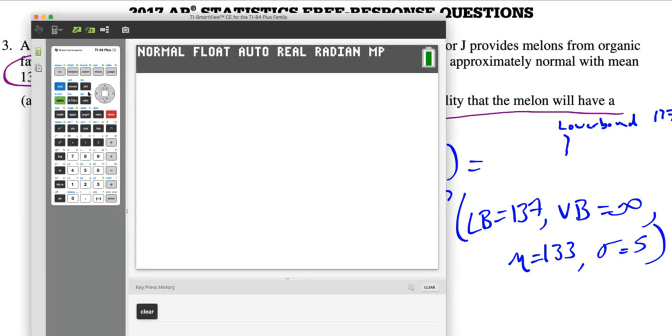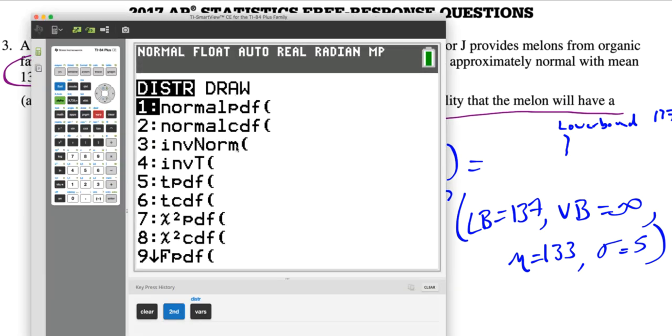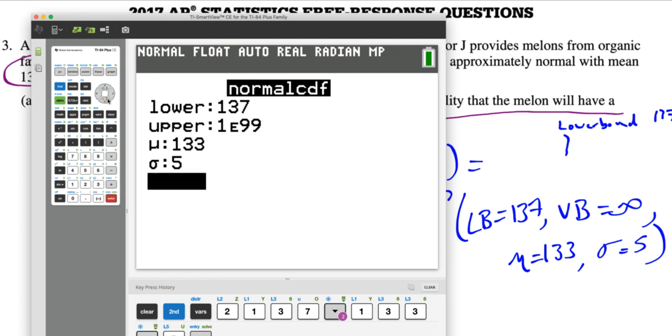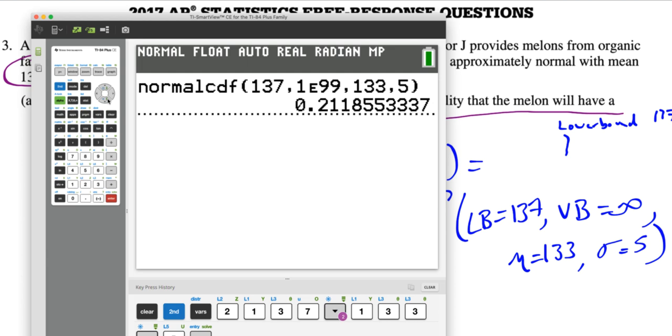Here is how we get to that again. We hit second, and then the distribution button, and choice two. We always use a cumulative CDF. The lower bound is going to be 137. And then I always have my students do 1E99 as infinity, that's as high as you can go in the calculator. I'm going to type in 133 and 5. And so after we figure that out, calculator tells you it is approximately 21%, so 21.19%.